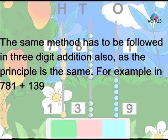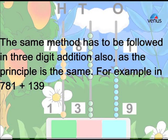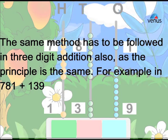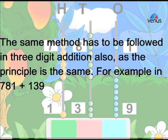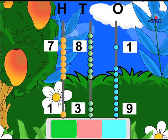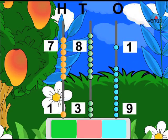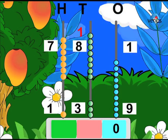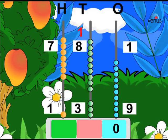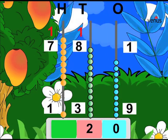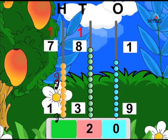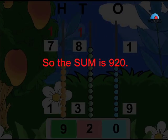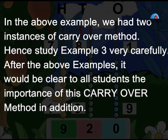The same method has to be followed in 3-digit addition also, as the principle is the same. For example, in 781 plus 139. Example 3: Add 781 plus 139. Step 1, step 2a, step 2b, step 3. So the sum is 920.